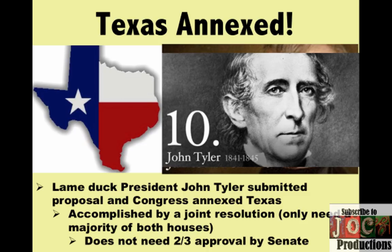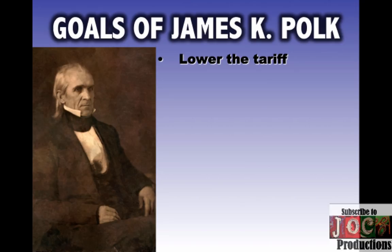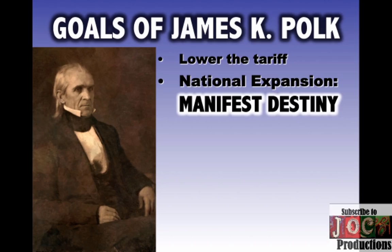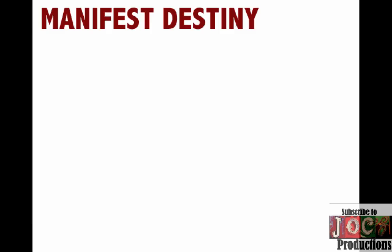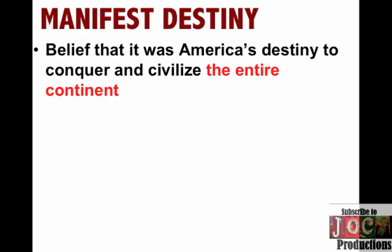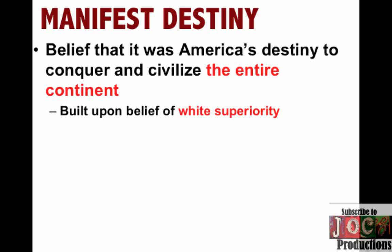Polk has some goals of his own. One, he wants to lower the tariff — he's a Democrat from the South, and the Whigs favor higher tariffs. Two, a big one: Manifest Destiny, national expansion. He has some places in mind: Oregon, where during the campaign he talks about 54-40 or fight — he's going to take that from England. He also wants to annex Texas, though Tyler preempts that, and he wants to acquire California. Manifest Destiny is the basic belief that it was America's destiny to conquer and civilize the entire continent from the East Coast to the West Coast. There is a certain level of built-in white superiority belief in this idea — that the people on the continent are not civilized, and that Americans are the ones to conquer it and bring civilization to the entire continent — ignoring that there are Native Americans, Mexico, England, and other groups already there.